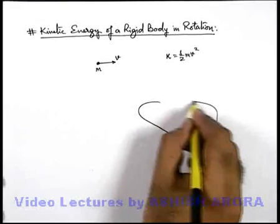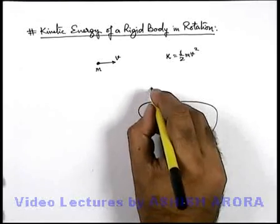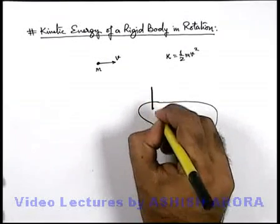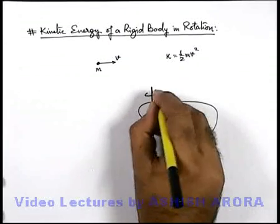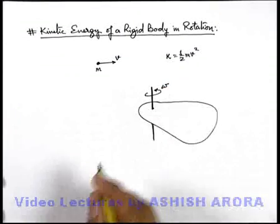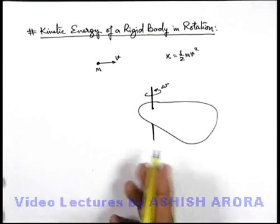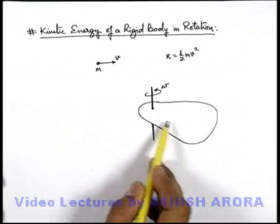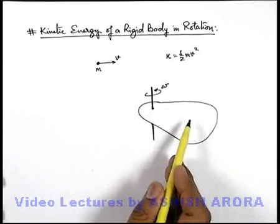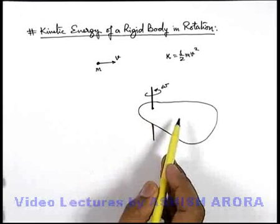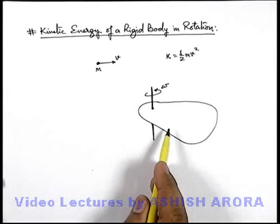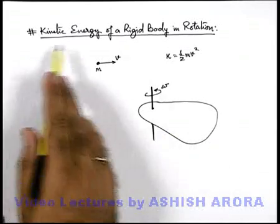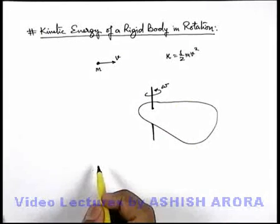Similarly, if we talk about a rigid body which is pivoted about a given axis of rotation and is rotating at an angular speed omega, obviously in this situation different particles are moving at different speeds due to its rotational motion. So the whole body must have some associated kinetic energy with it, and this energy we call kinetic energy of the body in rotational motion.